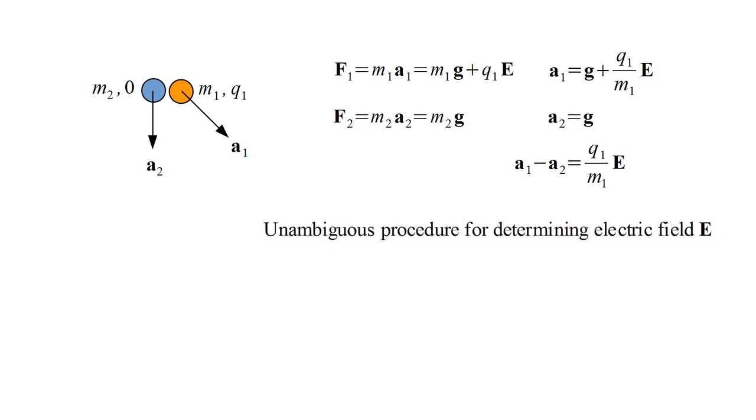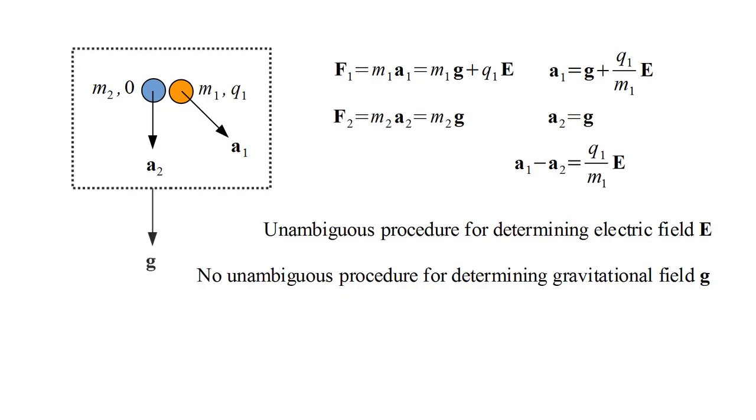There is no analogous procedure for the gravitational field, however. Now it's true that the acceleration of particle two equals the gravitational field. But imagine a second reference frame, initially at rest with respect to the first frame, that falls freely in the gravitational field.